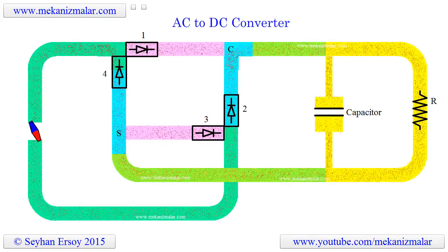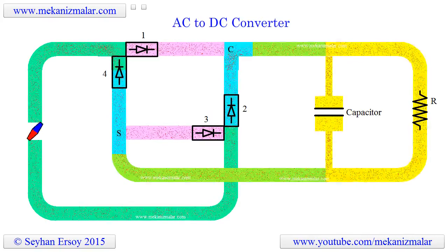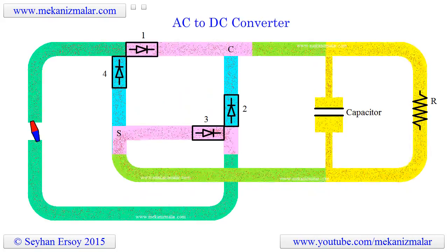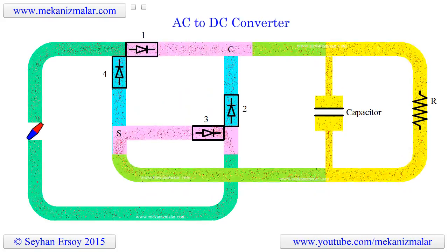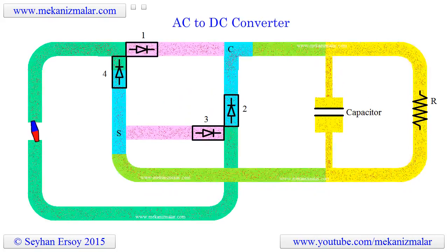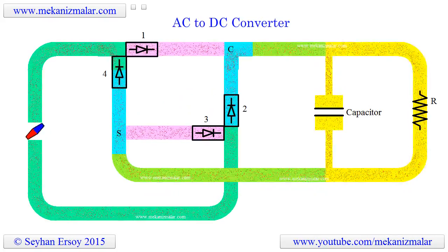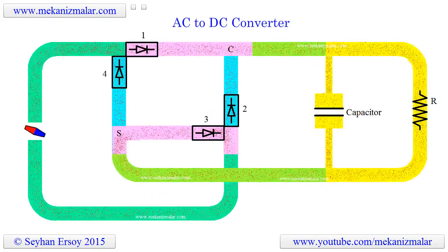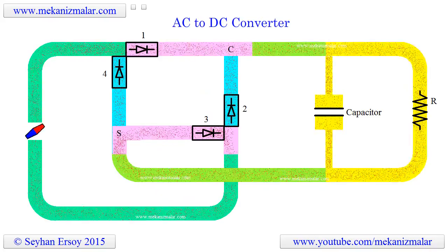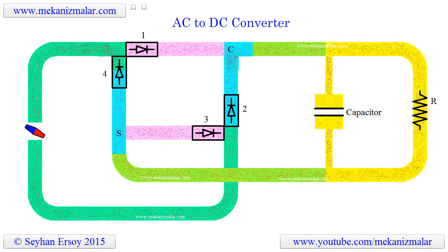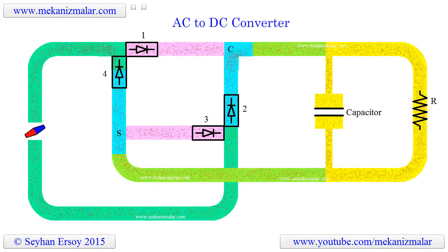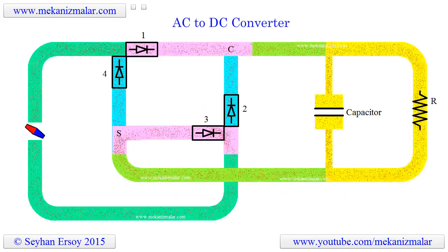Welcome to the video tutorials of mechanisms by Mekonismiller. In our daily lives we use two different types of electric currents: alternating current and direct current. We also call these AC and DC accordingly.